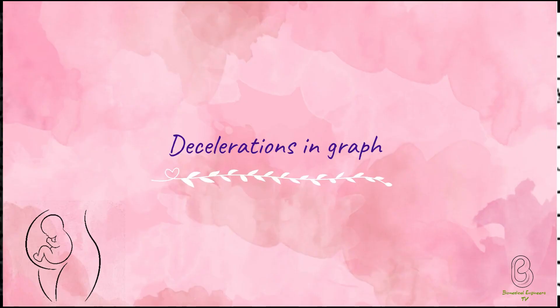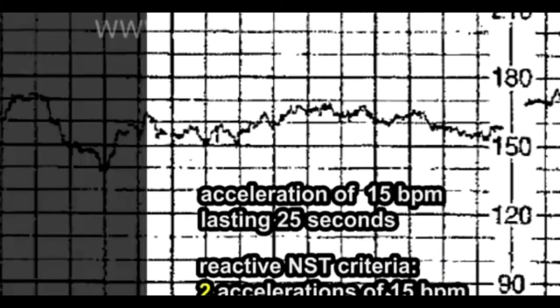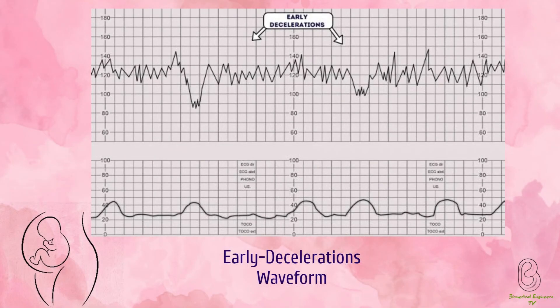Decelerations are an abrupt decrease in the baseline fetal heart rate of greater than 15 BPM for greater than 15 seconds. The fetal heart rate is controlled by the autonomic and somatic nervous system. In response to hypoxic stress, the fetus reduces its heart rate to preserve myocardial oxygenation and perfusion. Unlike an adult, a fetus cannot increase its respiration depth and rate. This reduction in heart rate to reduce myocardial demand is referred to as deceleration. There are a number of different types of deceleration, each with varying significance.